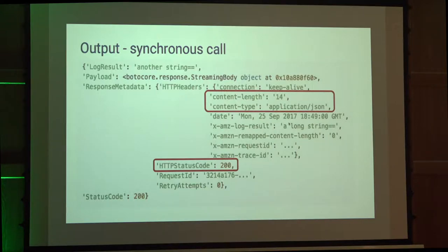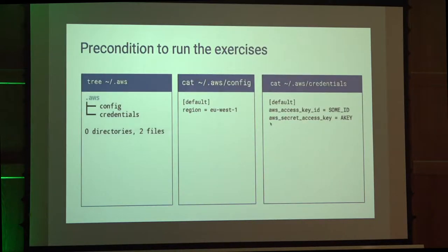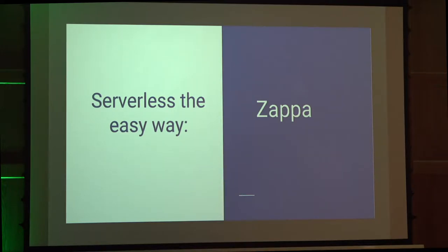The output is quite simple as well. If it's synchronous, you see a content length, a content type which is JSON in this example, and an HTTP status code of 200. If it's asynchronous, the content length is zero, there is no content type, and the HTTP status code is 202. There is a little precondition to run the exercises — you need to add some settings. There are two files: the AWS config file and AWS credentials. There are tools to create these or you can create them by hand.